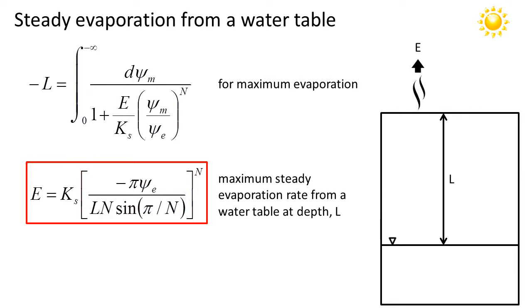The term in brackets includes the air entry potential in the numerator, and in the denominator, it includes L, the depth of the water table, N, which is the exponent calculated from the Campbell model, and a sine term. And the sine's argument is π over N, where N again comes from the Campbell function.